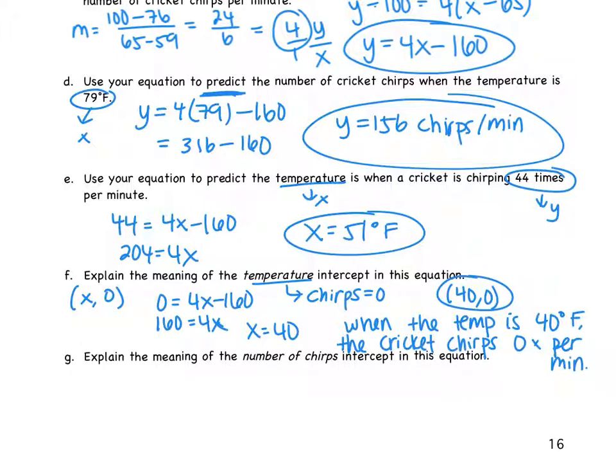Now, why would the cricket be chirping zero times per minute? It's too cold. It's too cold. It could be dead, yes, because it's too cold.